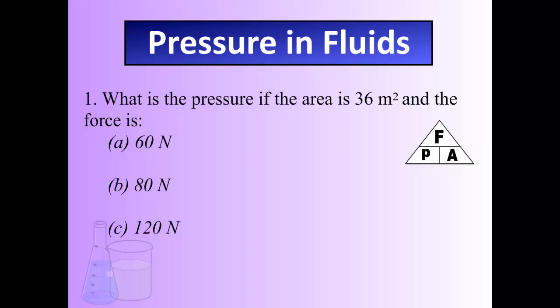Calculating pressure looks like this. We have an area of 36 square meters, and the forces are 60 newtons, 80 newtons, and 120 newtons. Let's quickly figure out what that would look like.